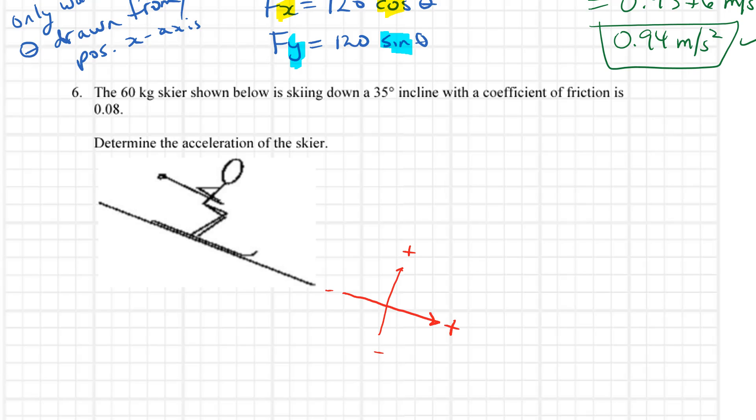We need to find the acceleration, so once again, we'll start with a force diagram. Maybe I'll put it over here. I've got a force of gravity going straight downwards and a normal force going perpendicular to the incline. That would be the normal force.